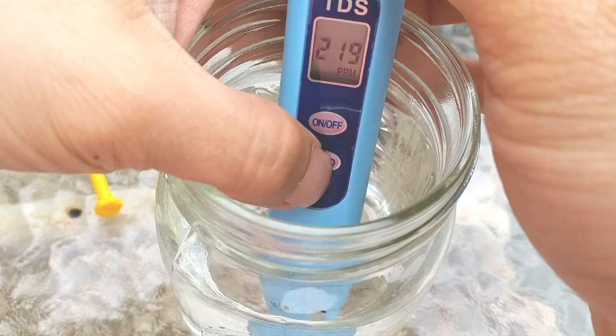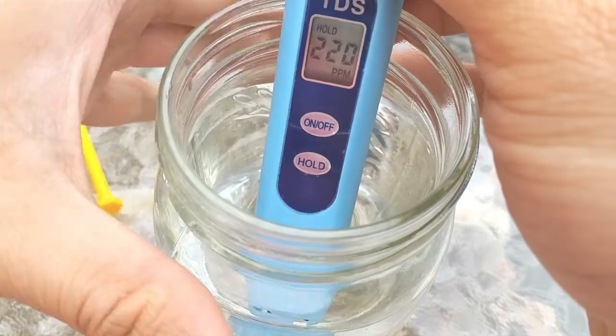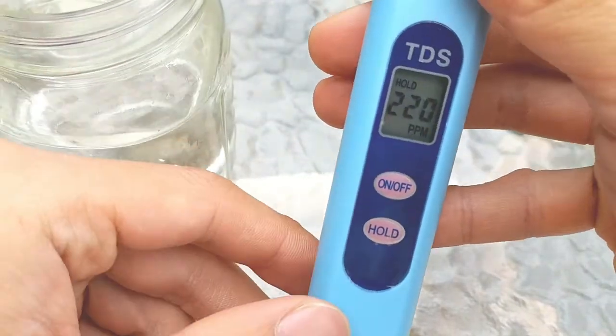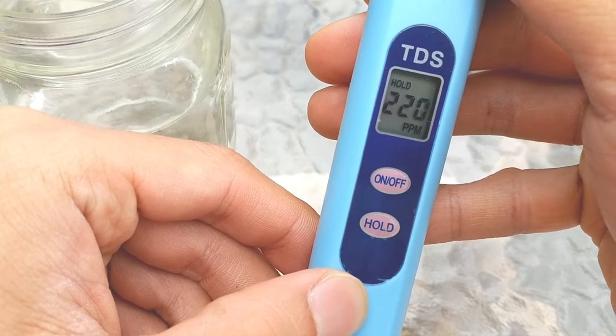So after submerging it in your nutrient solution, press the hold button to freeze the reading on the LCD, so that it will remain when you remove the tool from the liquid to read it.